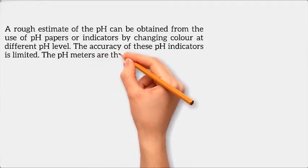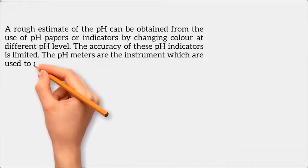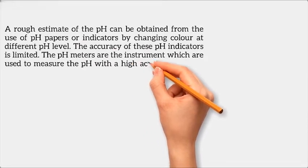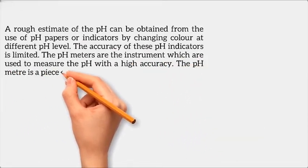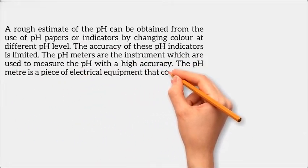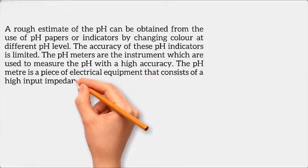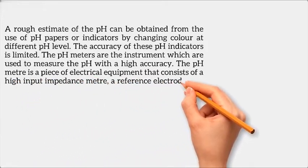pH meters are instruments used to measure pH with high accuracy. The pH meter is a piece of electrical equipment that consists of a high input impedance meter, a reference electrode, and a pH measuring electrode.